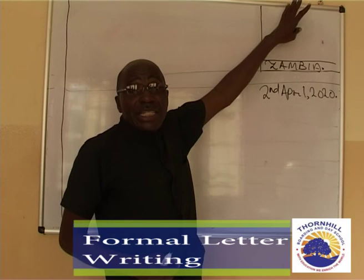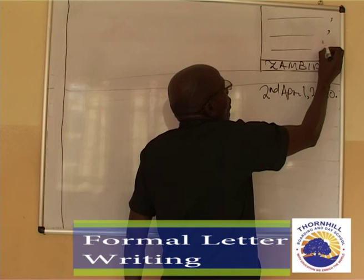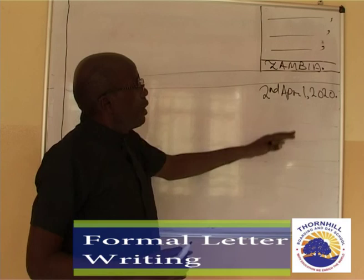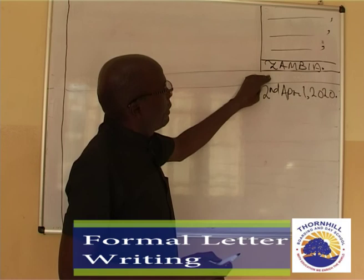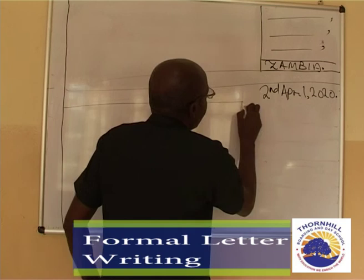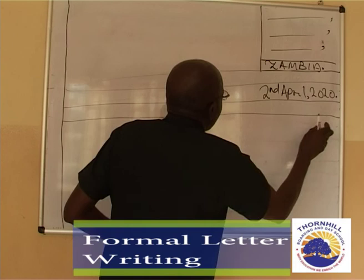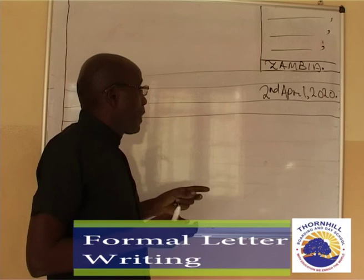The address must be punctuated with commas: the first line with a comma, the second line with a comma, and the third line with a comma, while the location — for example Lusaka — must end with a full stop. Skip a line after the location, write the date, then skip another line, and this is where you write the receiver's address, right at the margin.